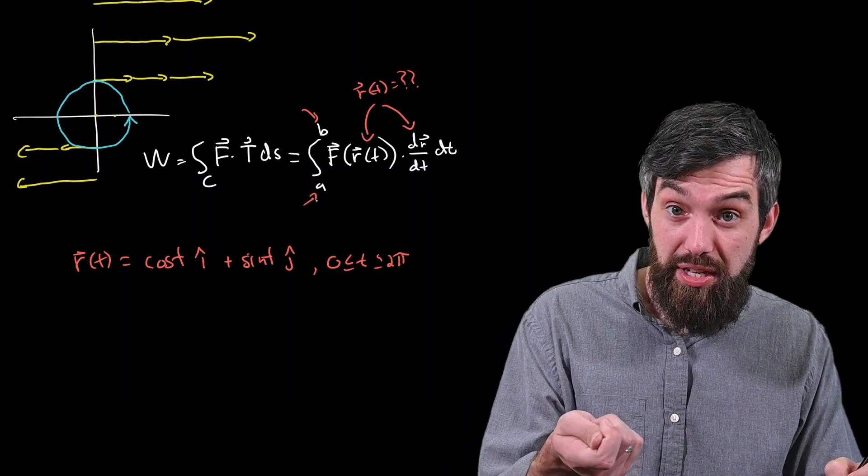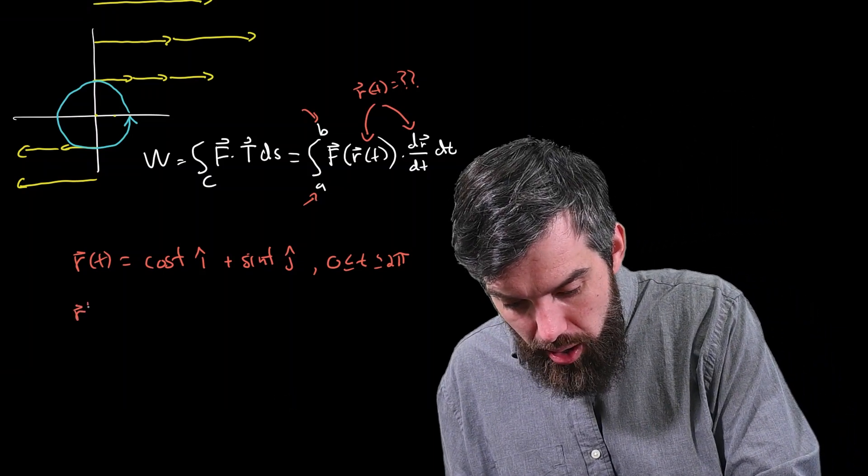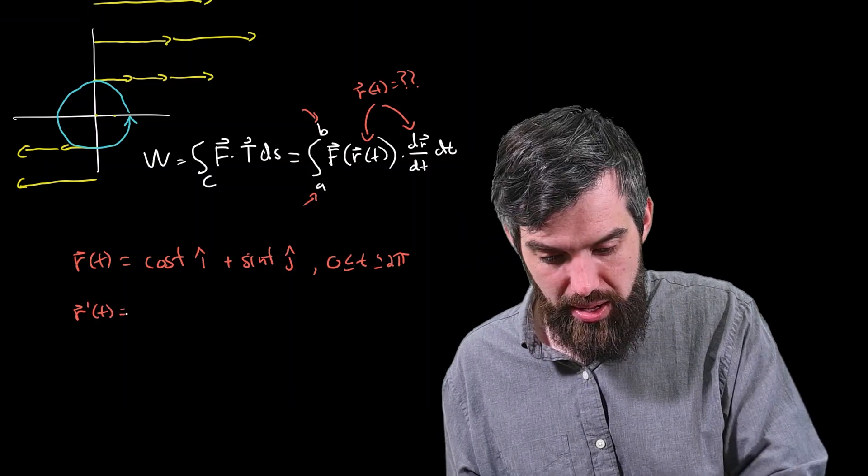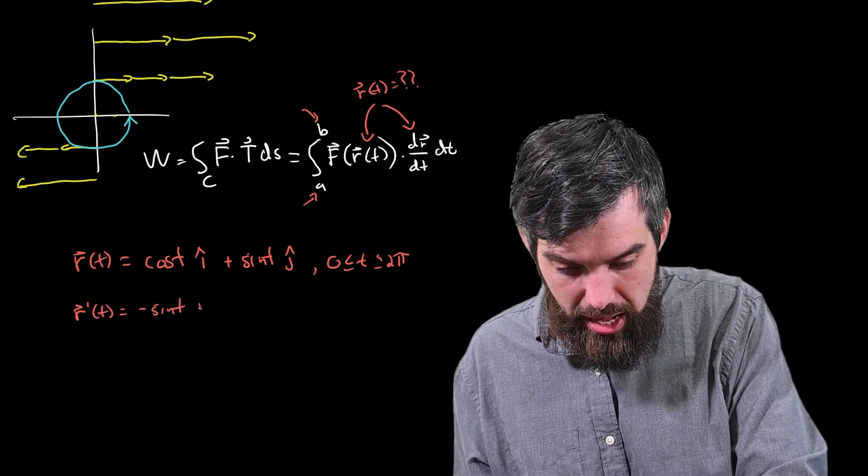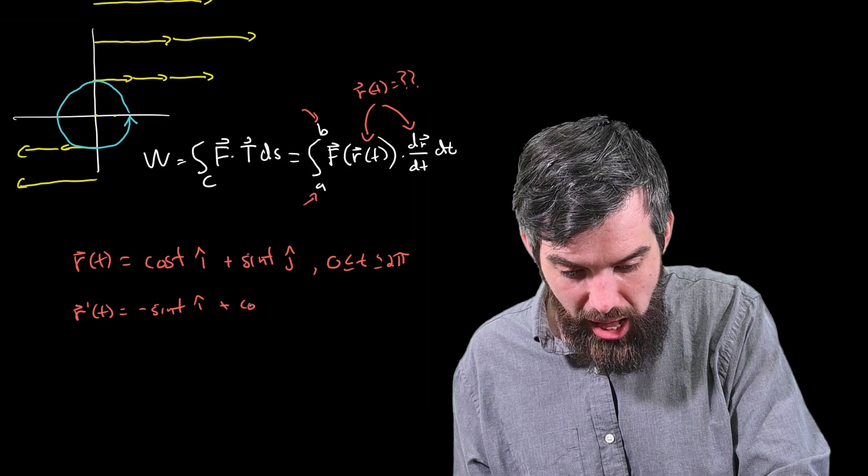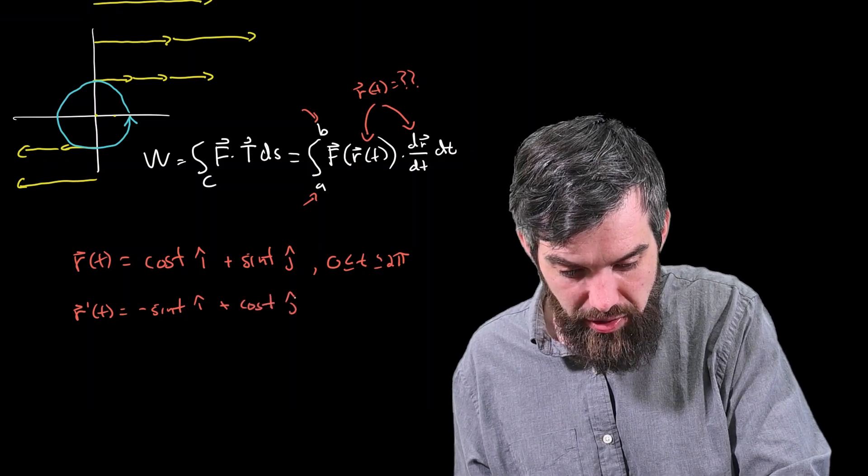If I know r(t), I can also compute what r'(t) is going to be, which in this case is -sin(t)*i-hat. The derivative of cos(t) is -sin in the i-hat. And then the derivative of sin is cos(t) in the j-hat direction.